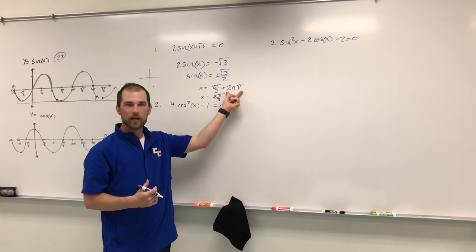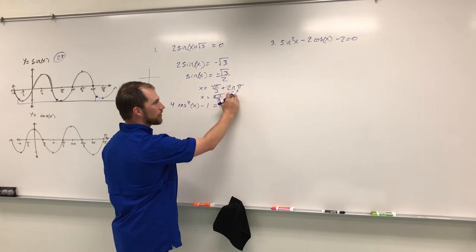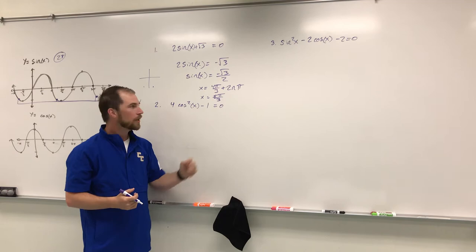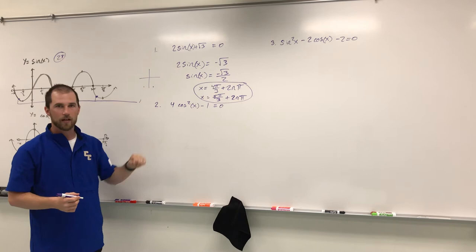The two n pi — the n stands for any number. Any positive or negative integer can work. If we plug in one, two, three, or negative one, negative two, negative three, it creates another four pi over three. We do the same thing and attach two n pi for five pi over three as well. So the answer is: x equals four pi over three plus two n pi, and x equals five pi over three plus two n pi.